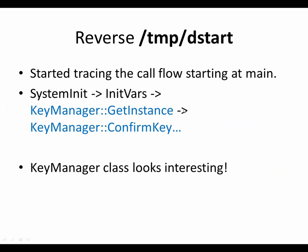So that didn't work out as well as I liked. I continued reversing and started tracing the call flow graph at main. It went something like this: system init, which calls init vars, which calls key manager get instance, key manager confirm key, and a whole bunch of other key manager stuff. This key manager class looks interesting — there's a lot of calls to it, a lot of functions.